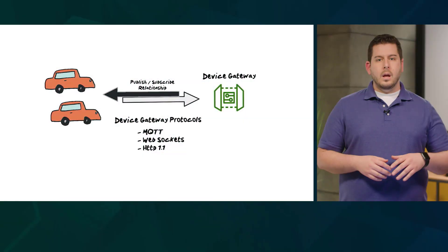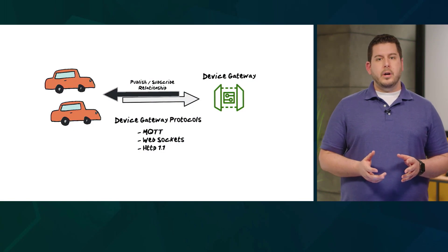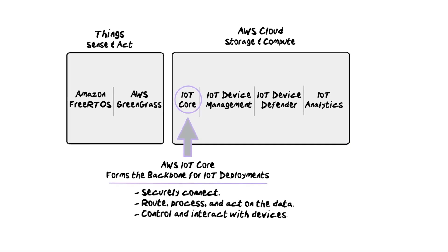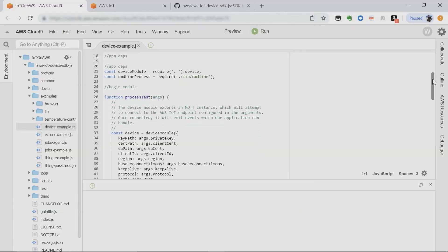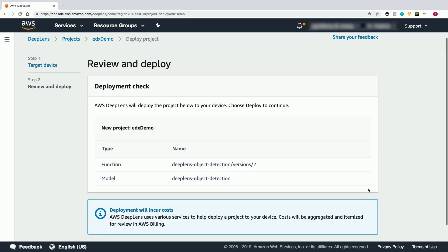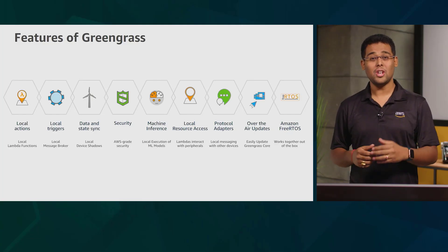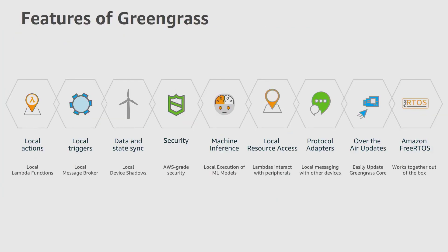You will have the opportunity to create an IoT application that uses several IoT services. You will use the AWS IoT Software Development Kit to programmatically communicate with and control remote devices. We will look at a distributed architecture where we will tie in devices at the edge using AWS IoT Greengrass.